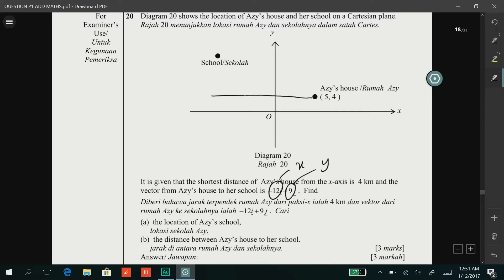So drawing a triangle here, we know that x here is -12 and y here is 9. Hence, to find the coordinates of the school, we just subtract negative 12 from 5. So here, you should get -7.